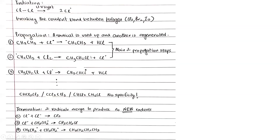These are the two main propagation steps you need to know for your examinations. However, there's no specificity — radicals can propagate in various ways. For example, another Cl radical can attack CH3CH2Cl instead of CH3CH3, producing CH3CH· and HCl. This can continue producing CHCl2, CCl3, or CH2Cl products. There is no specificity in free radical substitution; it can proceed in any way.